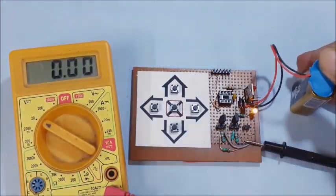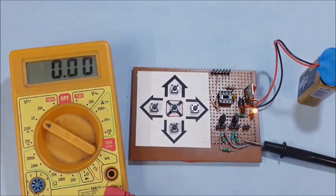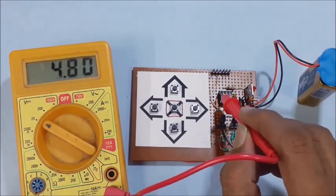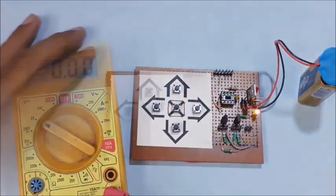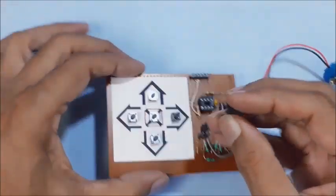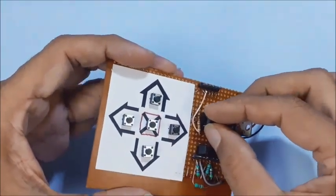Now, connect 9 volts battery to the circuit board. Then, check for 5 volts at pin number 8 with respect to the ground and also with respect to pin number 4. Then, insert the ATtiny13 carefully in its base with proper pin configuration.